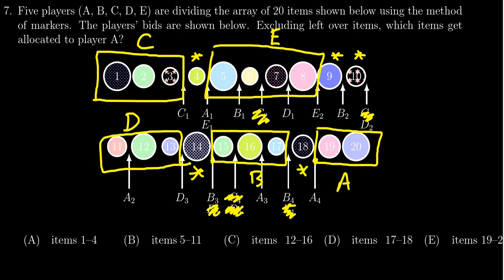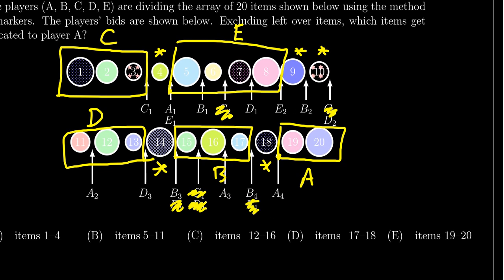18 is also an extra item. So A gets items 19 through 20. If we see here, choice E is exactly that—items 19 and 20. So the correct answer is E.